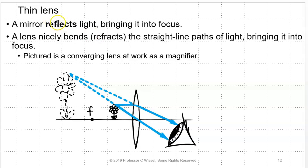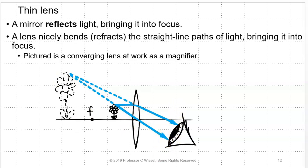Lenses have two focal points because light can come from either side. If parallel light comes from the left, it focuses at one focal point; from the right, it focuses at the other. For a thin lens they are equidistant from the center. Mirrors reflect light and bring it into focus; lenses bend or refract light. Be careful — there's only a two-letter difference between these words. Please pay attention to these tiny details on test questions. A magnifying lens takes light from an object and produces a large virtual image that your eye can examine in much greater detail.